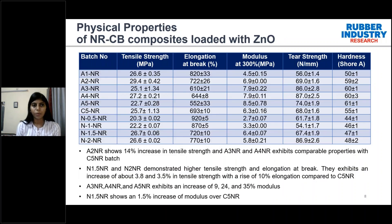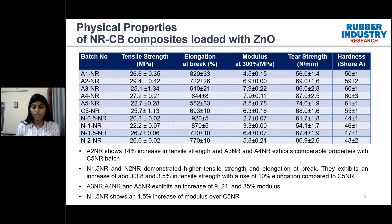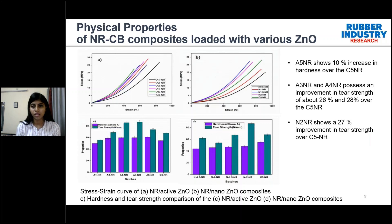Analyzing physical properties — tensile strength, elongation, modulus, tear strength, and hardness — A2NR shows a 14% increase in tensile strength, while A3NR and A4NR exhibit comparable properties with C5NR. N1.5NR and N2NR demonstrate higher tensile strength and elongation at break than C5NR. A3NR and A4NR increased modulus by about 9%, 24%, and 35% respectively. Overall, modulus, tensile strength, and elongation were better in all active zinc oxide and nano zinc oxide loaded compounds. For tear strength and hardness, N2NR shows a 27% improvement in tear strength over C5NR, while A2NR and A3NR show a 26% increase over C5NR.